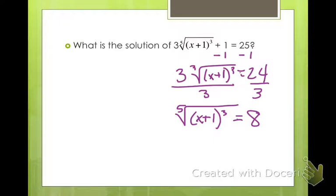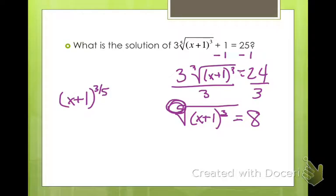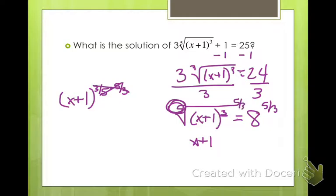In order to get rid of this fifth root of x plus 1 cubed, I'm going to change this into an exponent. The radicand index becomes the denominator and the power becomes the numerator, so this is actually x plus 1 raised to the 3/5 power. To get rid of it, I need to multiply by 5/3 to make that exponent equal 1 — those cancel. But I also have to do that to the other side, raising 8 to the 5/3 power, leaving x plus 1 on the left.